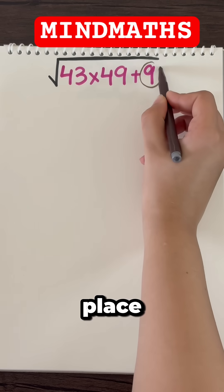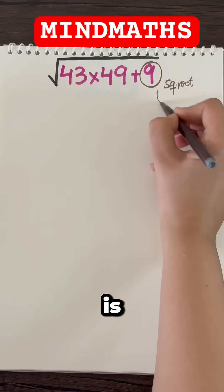Take the number at the end of the unit place, like here it is 9. The square root of 9 is 3.